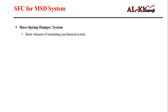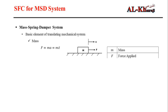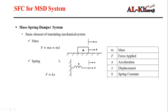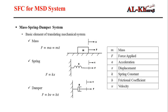The basic elements of any translating mechanical system are three elements: the mass, the spring, and the damper. The force in the mass is the mass multiplied by the acceleration, which is x double-dot, the second derivative of position. The force in the spring is the spring coefficient multiplied by x, the displacement. The force in the damper is b, the damping coefficient, multiplied by the velocity, x-dot, the first derivative of position.